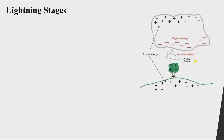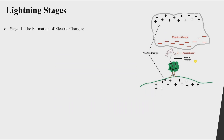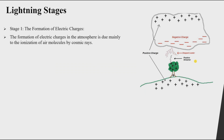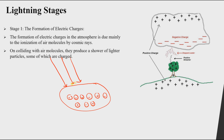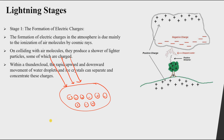In the first stage, electric charges are formed in the atmosphere mainly due to the ionization of air molecules by cosmic rays. We have many air molecules in the cloud, and due to cosmic rays coming from outer space, molecules with positive and negative charges form. Then due to the thundercloud or wind, these positive and negative charges become separated — one above and the other below.